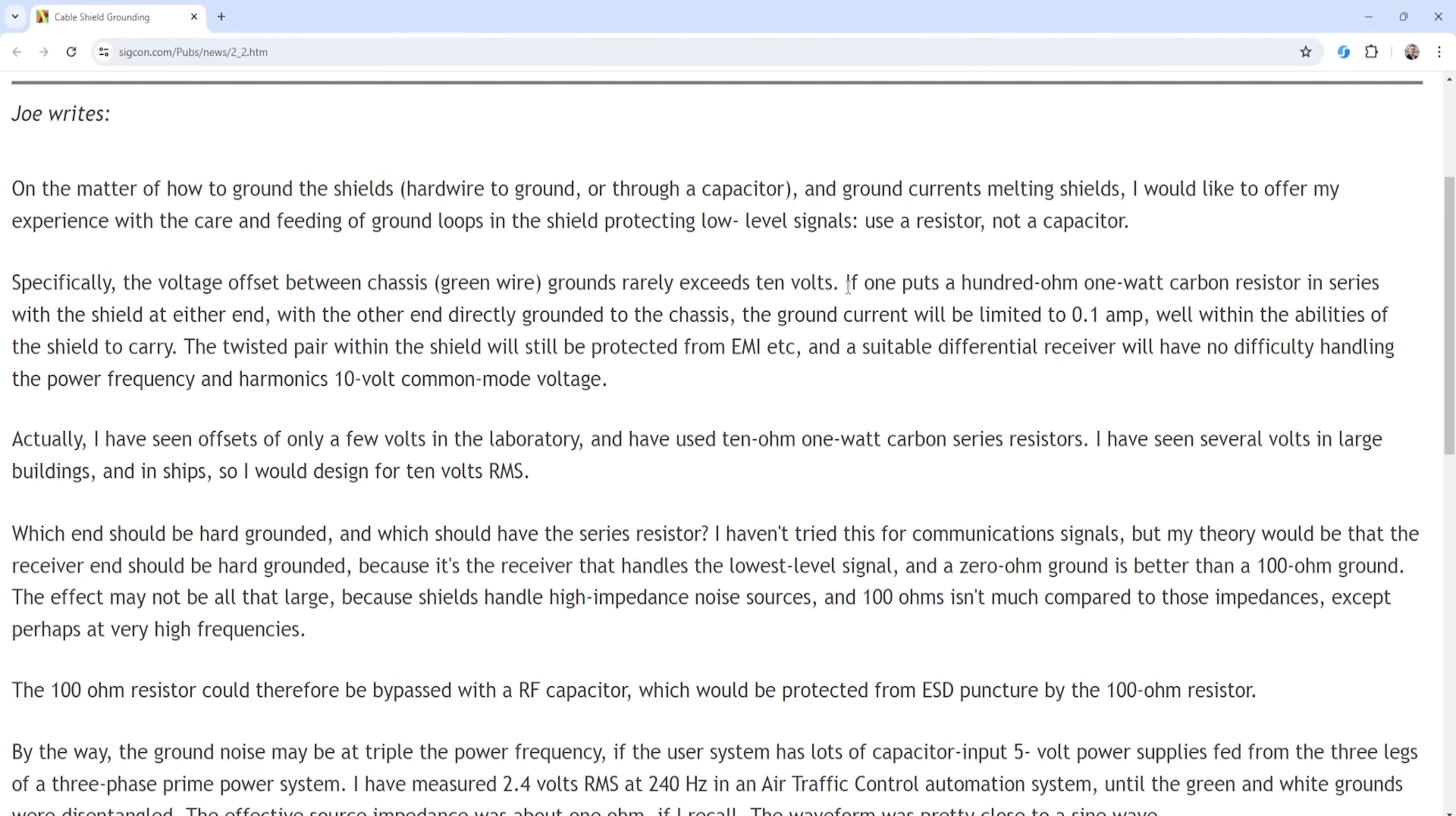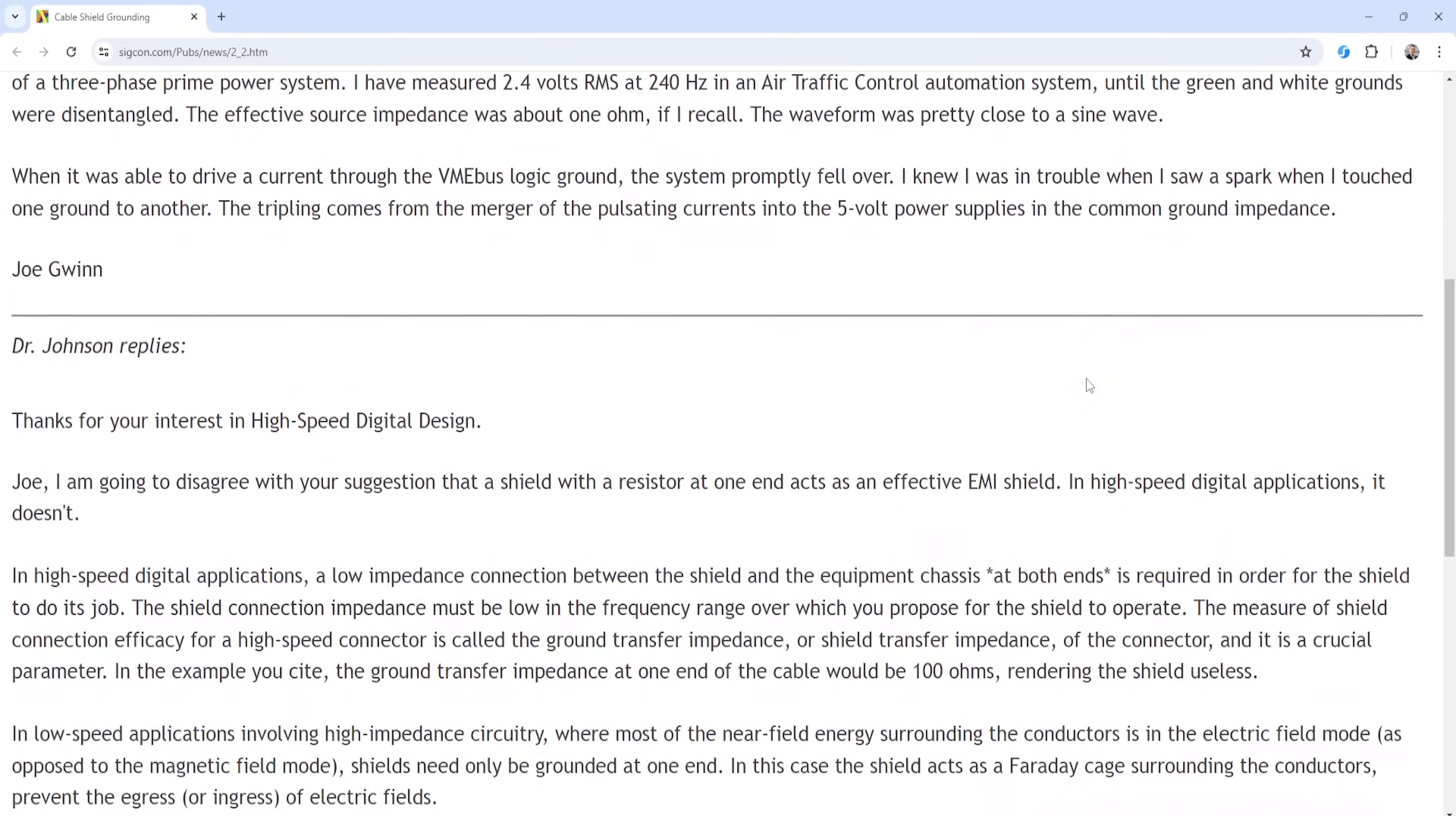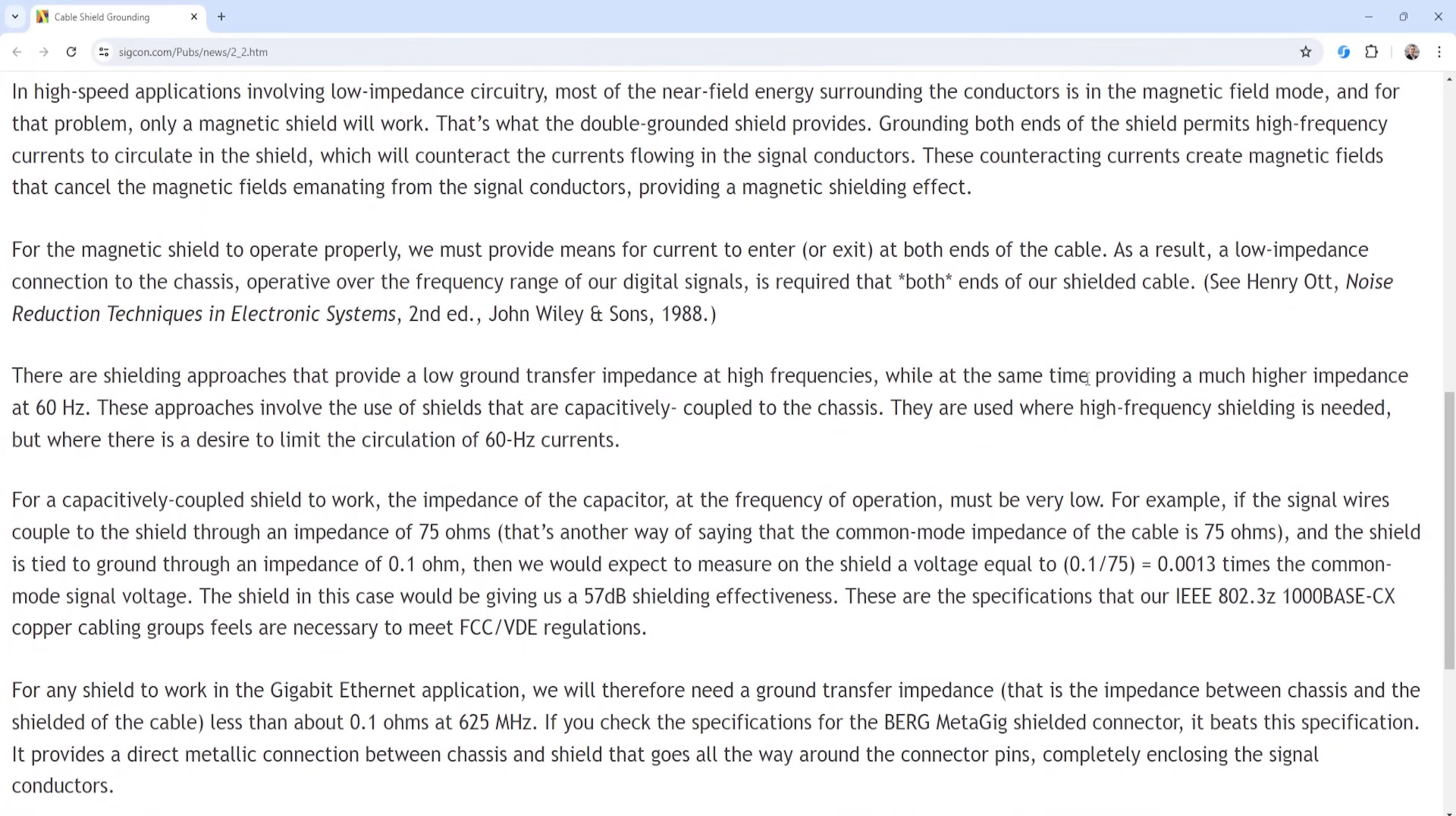So for example, if he were to put a 100 ohm one watt carbon resistor in series with the shield at either end, you would then expect 0.1 amps to flow across that cable shielding. Now this page goes on to talk about some different methods for handling shielding connections on each side of that shielded cable. We'll put a link to this article in the description, and I encourage you to go take a look at this article because it's very informative on the topic of shielded cables.